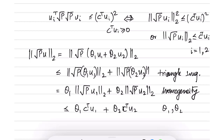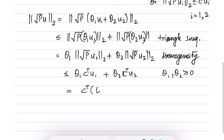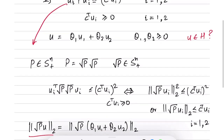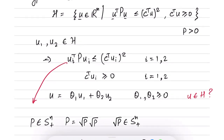Here we have used the fact that θ1, θ2 are greater than or equal to 0. Finally, this equals c^T (θ1 u1 + θ2 u2) = c^T u. Therefore, we have that ‖√P u‖ ≤ c^T u, which implies that u also belongs to the hyperbolic cone. Hence, H is a convex cone. We have established that the hyperbolic cone, as its name implies, is in fact a convex cone.